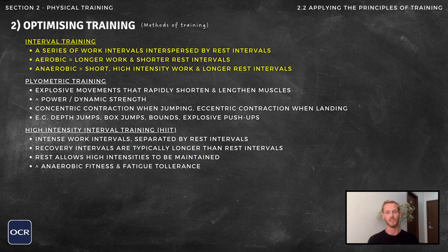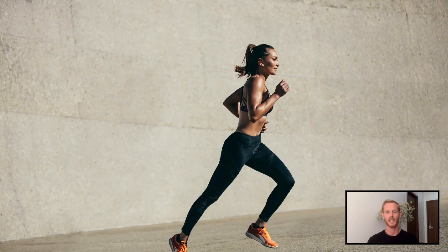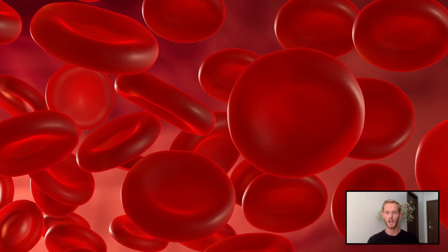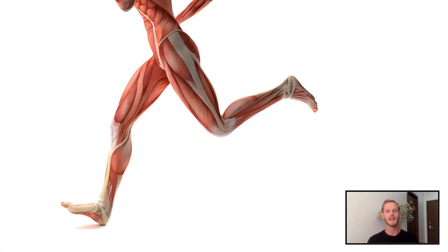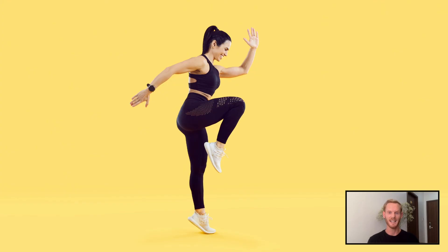We'll now look at the phases and physical benefits of a warm-up. The first phase is the pulse raiser, which involves performing whole-body exercises like jogging, cycling, or swimming, to gradually increase heart rate and breathing rate. This increases blood flow and oxygen delivery to the muscles, and speeds up the removal of waste products like carbon dioxide. The muscles become warmer and more flexible, reducing the risk of sustaining an injury. Next, mobility exercises carry joints through their full range of motion — movements like arm swings, heel flicks, and high knees engage the muscles and prepare the joints for action.